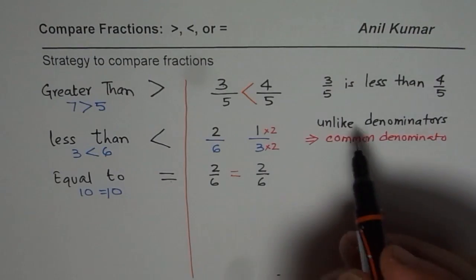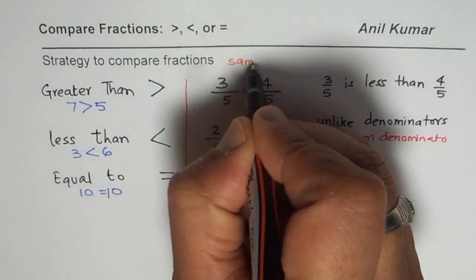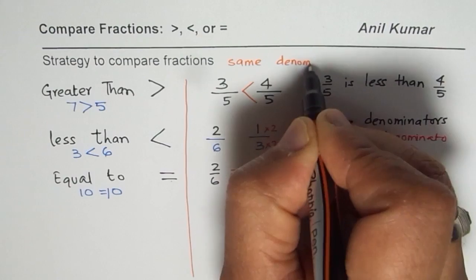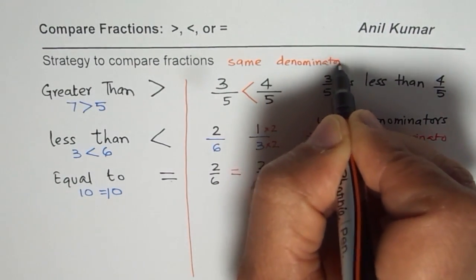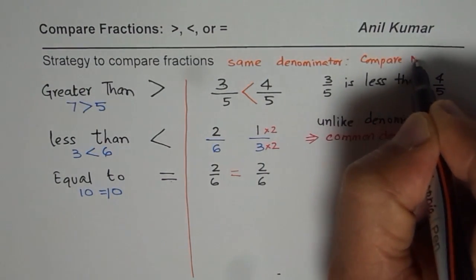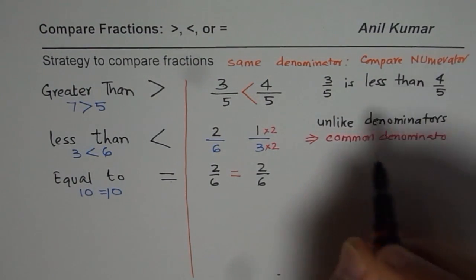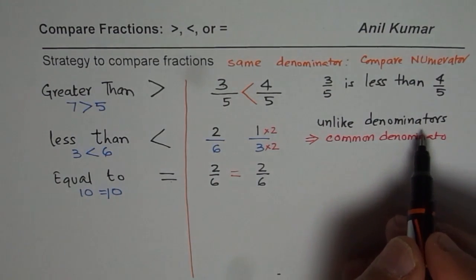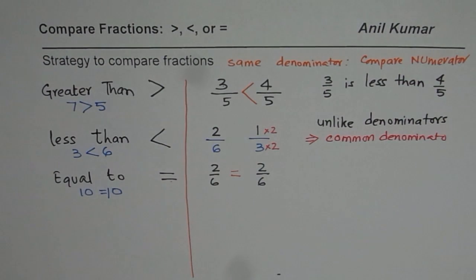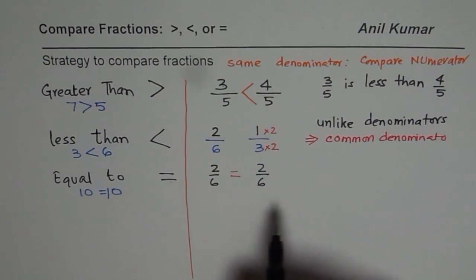So in summary: if we have like denominators — the same denominator — then just compare the numerator. But if you have unlike denominators, make them the same and then compare. That is how you should be doing it. Here are a few examples which I will also do, and then there will be questions for you to solve.